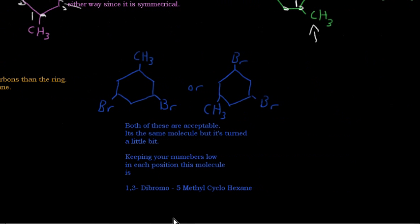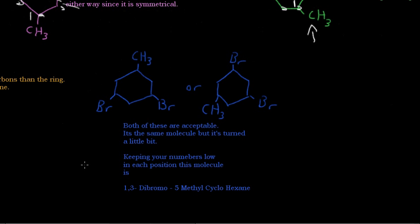Moving on to one more here. This is 1,3-dibromo-5-methyl-cyclohexane. And both of these models are acceptable. It's the same molecule, just rotated a little bit. This model here is rotated that way. Well I guess this one is rotated that way, and that's what it would look like. So both of these are acceptable, it's the same molecule, but it's just turned around. And remember keeping your numbers low in each position. So you just want to keep your numbers low when you're numbering these. So 1,3-dibromo-5-methyl-cyclohexane on that one.